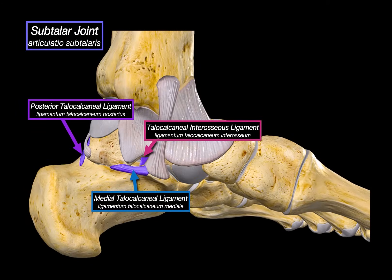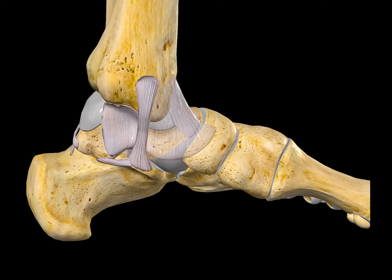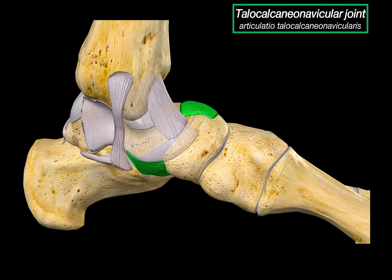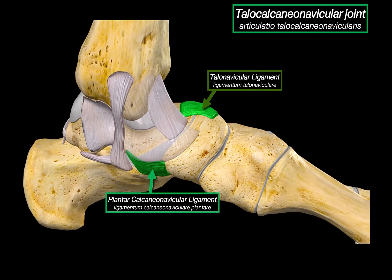Now let's move on to the next joint, which lies between the talus, calcaneus, and navicular — the talo-calcaneo-navicular joint. It is functionally connected to the subtalar joint; they work together to allow inversion and eversion of the foot. It's held in place by two major ligaments: the talocalcaneal ligament stretching from the head of the talus to the navicular, and just below that, the plantar calcaneonavicular ligament, also known as the spring ligament. This one supports the head of the talus from below and plays a huge role in maintaining the medial longitudinal arch of the foot.